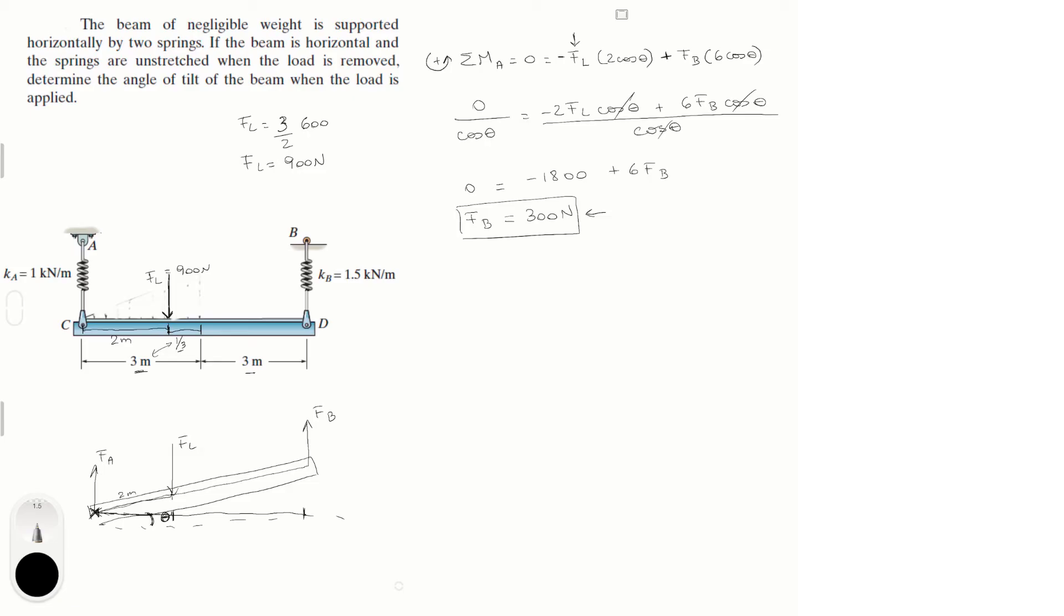And now that we have F_B, we can find F_A. You could do the moments about B, but that's too complicated. I don't want to be thinking of angles too much. Let's just do the sum of the forces in Y is equal to zero, and that is equal to F_A going up minus the load going down plus F_B. We just found F_B. We already found F_L, let's find F_A. F_A is equal to the load minus F_B. F_A is equal to six hundred newtons. Simple. We have F_B and F_A.